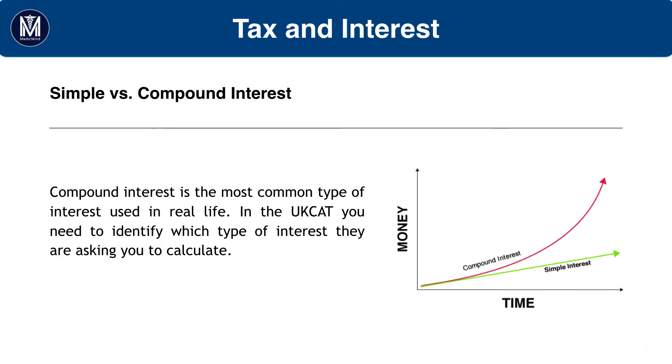If we're investing £100 into a bank, it's much more profitable to get compound interest than simple interest. In real life, compound interest is the most common of the two. In the UKCAT, you want to identify which type of interest they're asking you to calculate, as the calculation will vary considerably for both.